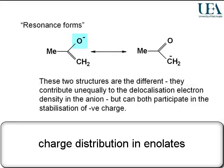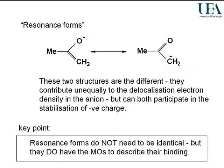For example, we could write the structure with an O- position, or we could write the structure with the charge at the other end of the pi system, which would correspond to a C- type of situation. So it's the same conceptually, but when you look at these two structures, clearly as images that describe the pi system, they are different. Resonance forms do not need to look identical to be valid. And if they look different, then they must contribute differently to the true picture. And conversely, if they look the same, then clearly they're equally valid, because they are the same thing.